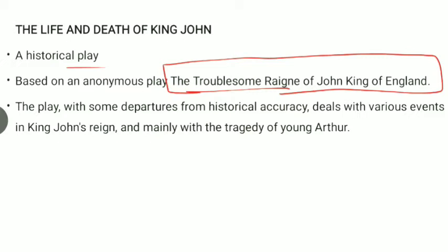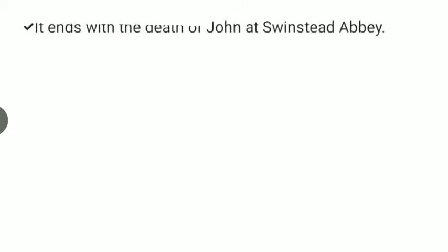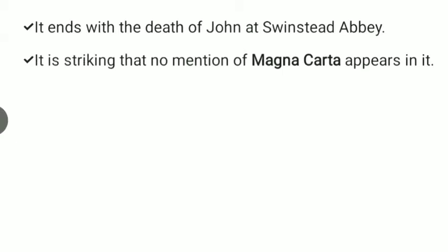The source play is Troublesome Reign of John King of England, from which Shakespeare has taken it. The Life and Death of King John is written with some departure from historical accuracy. It deals with various events of King John's reign, the tragedy of young Arthur, and the death of John at Swinstead Abbey.